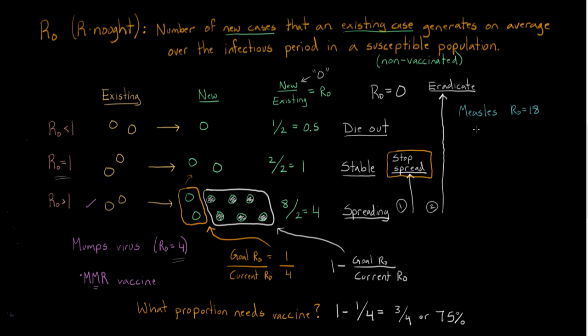So we'd say, okay, that means 1 minus, our goal is to stop the spread, so 1, divided by, we said the R0 is 18. So this is the proportion that we need to vaccinate. And that works out to about 94%. Holy cow, so that's much higher than what we saw with mumps. Let's do one more example.